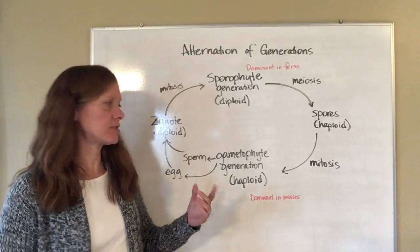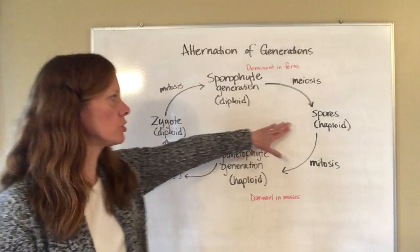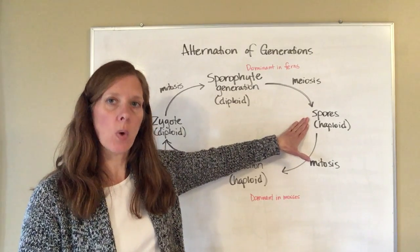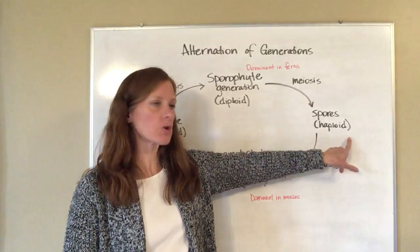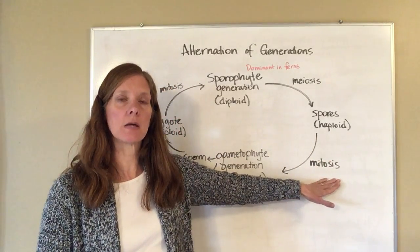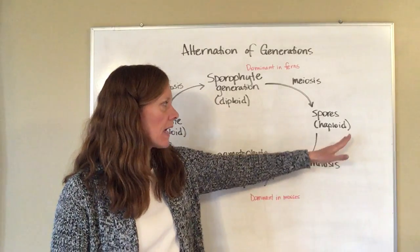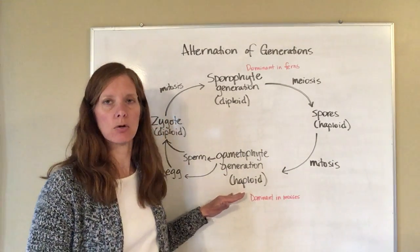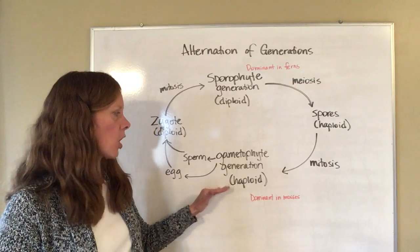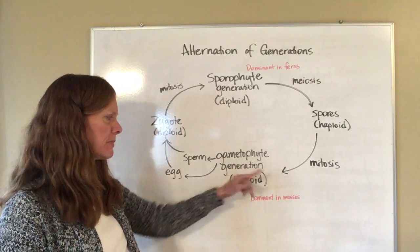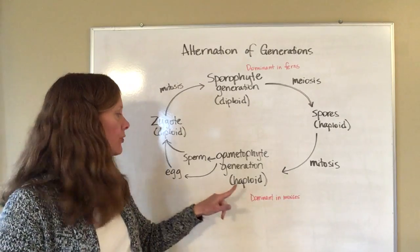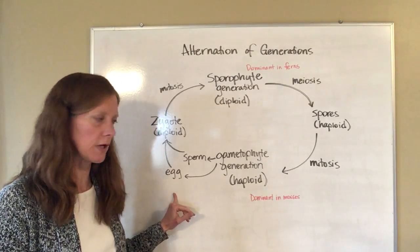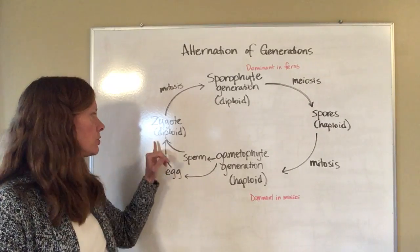Alternation of generations is a cycle, so it doesn't really matter where I start, but I'll choose to start with the spores. Spores are haploid, meaning they have just one copy of the chromosomes. The spores undergo mitosis, which means they make more haploid cells, and as those reproduce and grow, you end up with the gametophyte generation. The gametophyte generation has all haploid cells in it, and those cells also produce sperm cells and egg cells, which are also haploid.